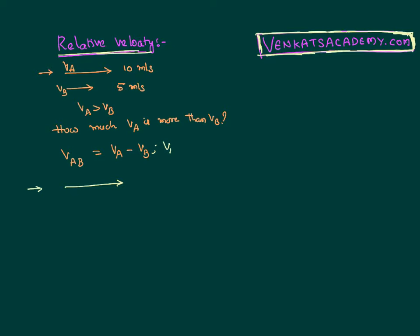Say if I want velocity of the B with respect to A, it will be VB minus VA. So it will be minus 5. That means it is in opposite direction.